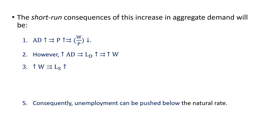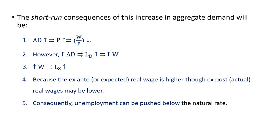Because the ex-ante, or expected real wage, is higher, although the ex-post, or the actual real wage rate, may be lower. Consequently, unemployment can be pushed below the natural rate. This is precisely what the Phillips curve shows — that is, the negative relationship between unemployment and inflation.